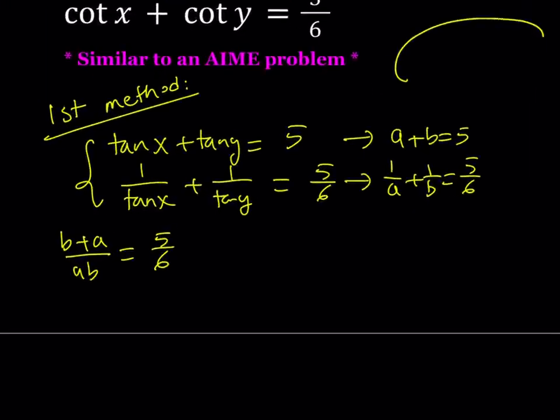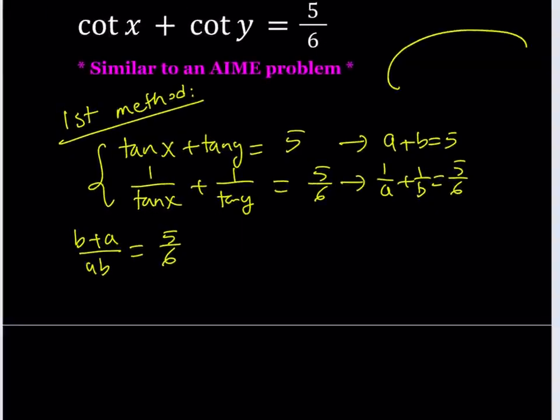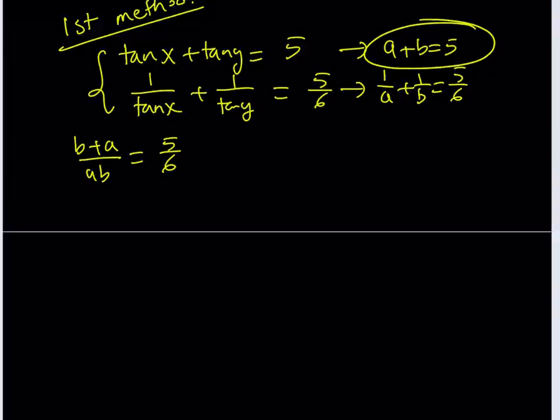Now remember, a + b is equal to 5. So this is 5, which indicates that ab must be 6. So this implies that ab = 6, and we already know a + b = 5.